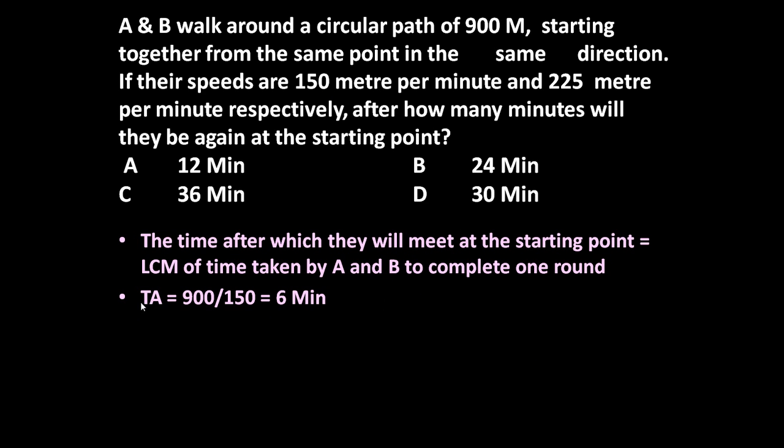So if we say TA is the time taken by A to complete one round, one round means 900 meter. So time is equal to distance traveled, that is 900 meter, divided by speed, speed is 150 meter per minute. So time taken by A to complete one round is equal to 900 upon 150 is equal to 6 minutes. So A will complete one round in 6 minutes.